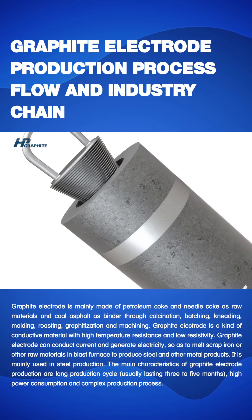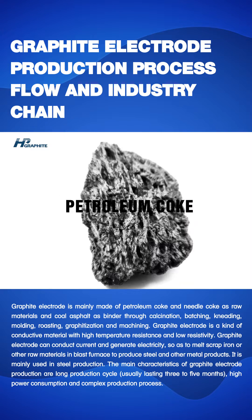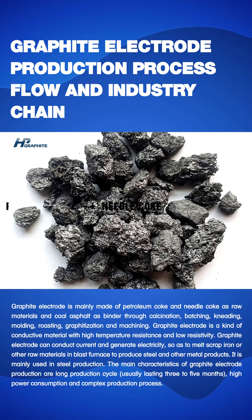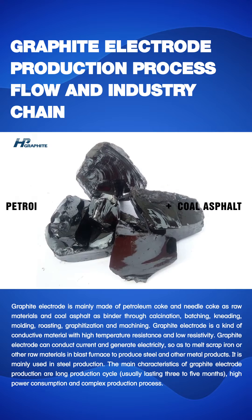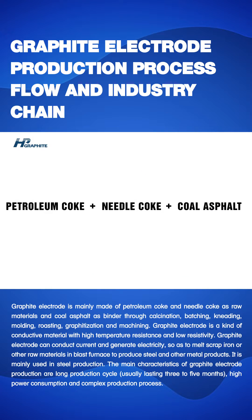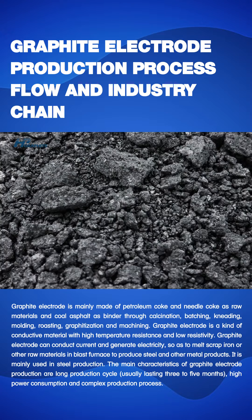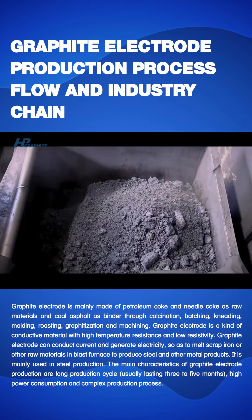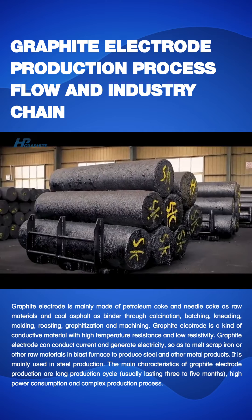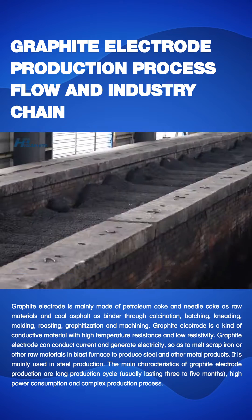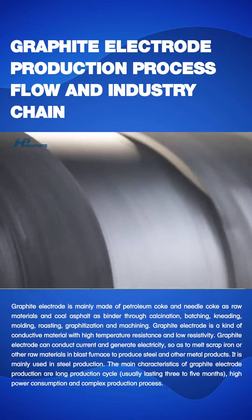Graphite electrode is mainly made of petroleum coke and needle coke as raw materials and coal asphalt as binder, through calcination, batching, kneading, molding, roasting, graphitization, and machining.